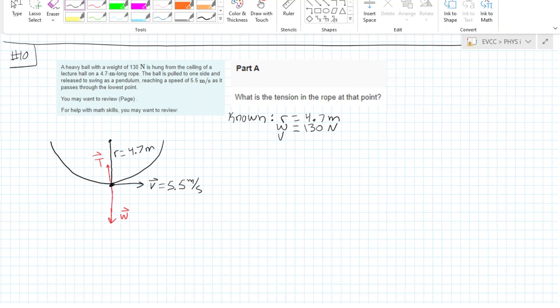We have an initial tangential velocity of 0 when they drop it, and then a final tangential velocity of 5.5 meters per second.